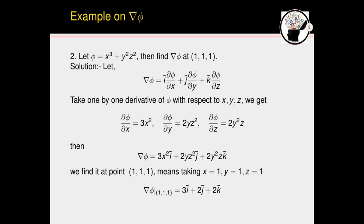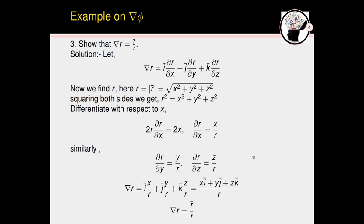Substituting all partial derivatives, grad(phi) = 3x² i + 2yz² j + 2y²z k. Now evaluating at point (1, 1, 1), where x = 1, y = 1, z = 1, we substitute these values into the equation and get: grad(phi) at (1,1,1) = 3i + 2j + 2k.